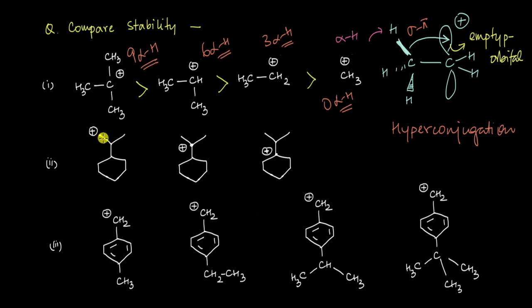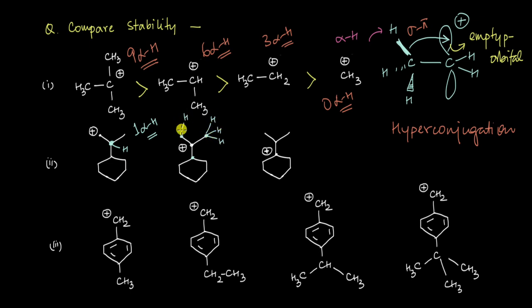In this cation, the positive charge is at the terminal position and we only have one sp3 carbon atom directly attached. That carbon has three bonds shown, so it has one hydrogen attached — giving this cation one alpha hydrogen. Now looking at the next cation, it has three sp3 carbon atoms at the alpha position: one with three hydrogens, another with three hydrogens, and one with one hydrogen — giving a grand total of seven alpha hydrogens, so there will be greater hyperconjugation here.